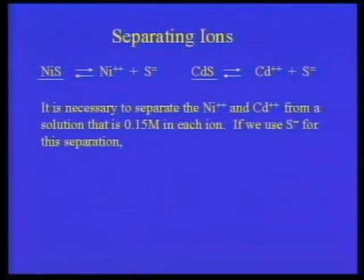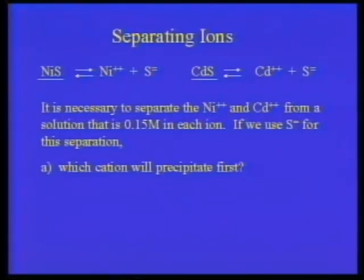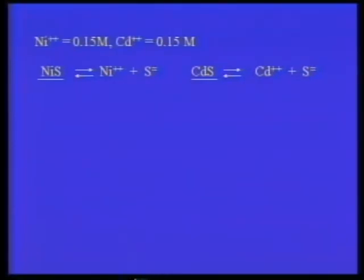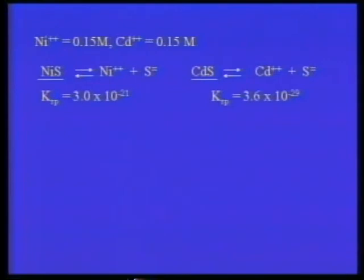We're going to use sulfide ions to effect this separation. We want to know: if we add those sulfide ions gradually, which one of those cations will precipitate first? And when the second one is just ready to precipitate, how much of the first one has already gone? The Ksp for nickel sulfide is 3×10⁻²¹, and the Ksp for cadmium sulfide is 3.6×10⁻²⁹.